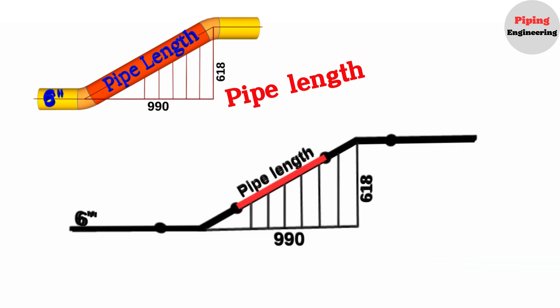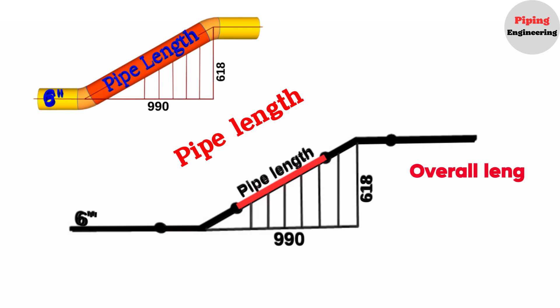We need to find the length of the pipe piece between two elbows in this pipeline. To find the length of the pipe piece between two elbows in a pipeline, we need to know the following steps. First, we will calculate overall length, center-to-center distance of the two elbows.